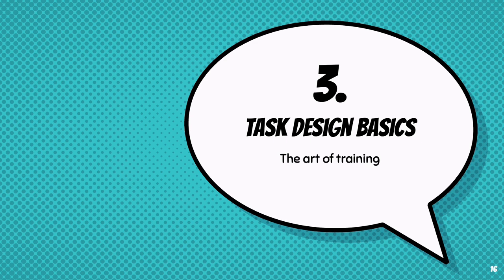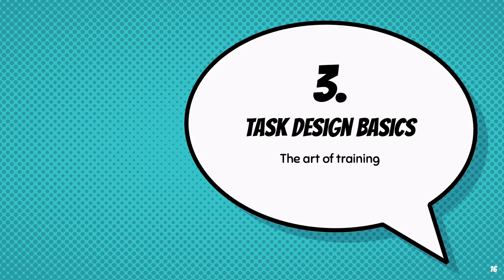Let's move on to the task side of our ground rules, where we consider how to design training, which is an art in itself. Another set of complex words with a simple meaning: perception-action coupling. When we want to make a move, whether in cricket or even just walking around at home, we use the information around us to choose our actions. We don't necessarily consciously think about it, but our brain isn't actively processing that information and we can still use it.